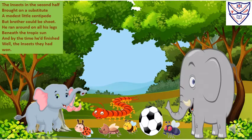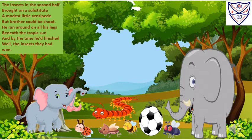In the second stanza: The insects in the second half brought on a substitute, a modest little centipede. But brother, could he shoot! He ran around on all his legs beneath the tropic sun, and by the time he was finished, well, the insects, they had won.